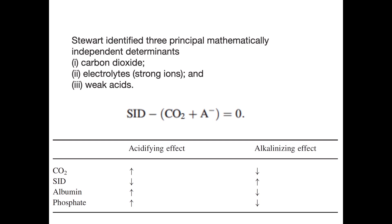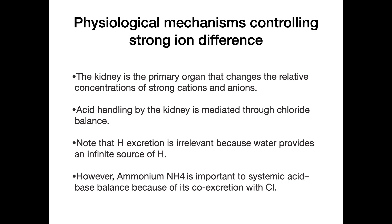The opposite effects result in alkalosis. The kidney is the primary organ controlling strong ion differences. Acid handling by the kidney is mediated through chloride balance. Hydrogen ion excretion is irrelevant because water provides an almost infinite source of hydrogen ions. Ammonium is important to systemic acid-base balance, not for the excretion of hydrogen ions but for the excretion of chloride ions. It is the excretion of chloride that actually reduces acidosis.